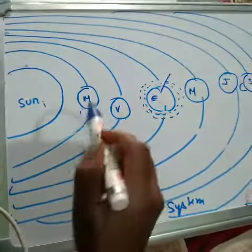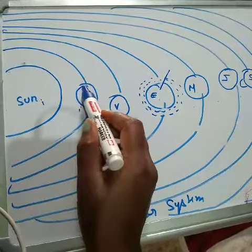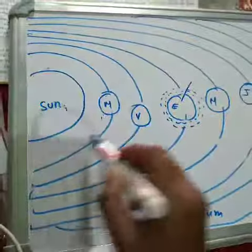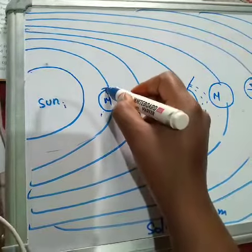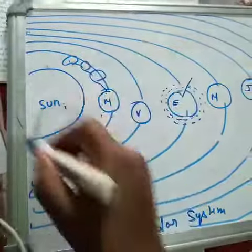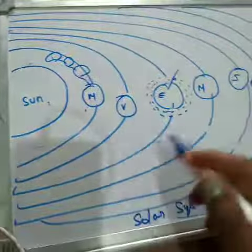Like Mars, it also revolves around the Sun like this. It is here, then after some time it will come here, then here, then here. It will rotate around the Sun, it will revolve around the Sun.